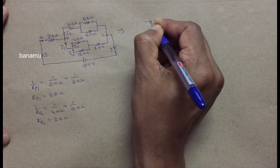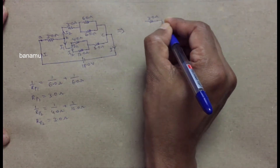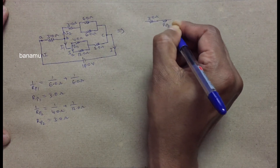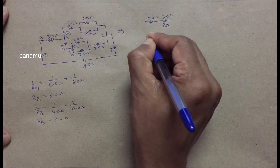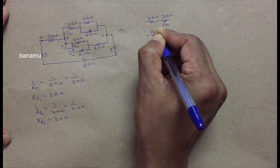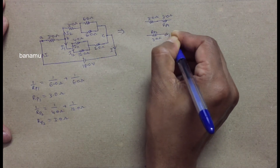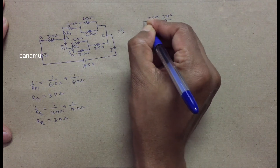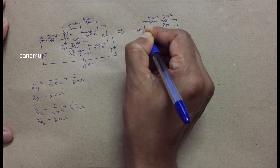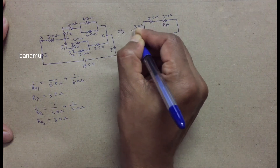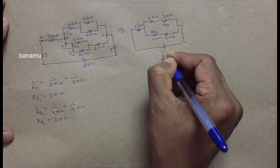Draw the modified figure. In the upper part, the 3 ohm series resistance and Rp1 (value 3 ohms) are connected in series. In the lower part, Rp2 (value 3 ohms) is connected to the 2 ohm resistance in series. Both the upper and lower branches are connected in parallel to each other, and the parallel combination is connected to the 3 ohm series resistance. The circuit is connected to the 18 volts battery.